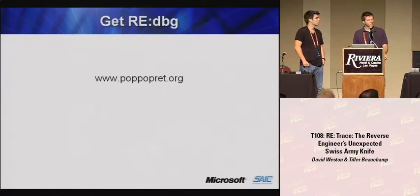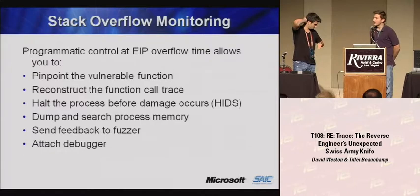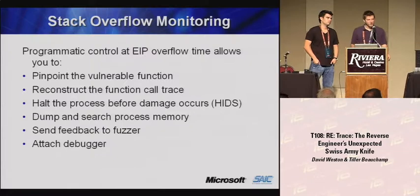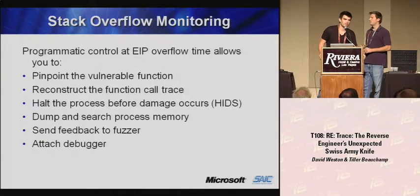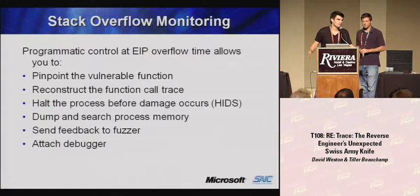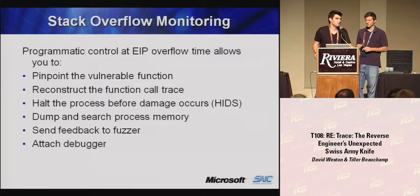Our framework is up on pophopred.org — we're going to put it up tonight. RTrace is already there, we just need to add RedBug. Let's look at monitoring the stack. We'll assume we have a classical stack buffer overflow, trace our application until that instant, and print out all the information we care about. This is useful when you're fuzzing an application and get an exception — the stack is filled with A's, but who overflowed it and where? How can you leverage that to understand the vulnerability or get arbitrary code execution?